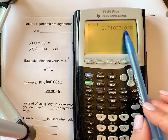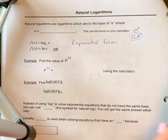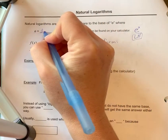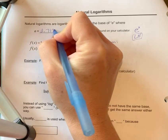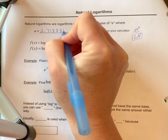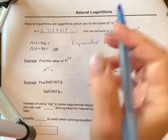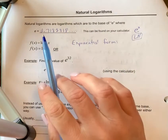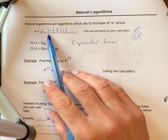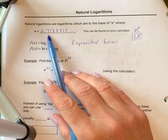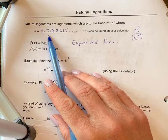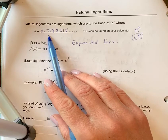2.718281828, and it continues. It's an irrational number. So 2.7182818, etc. Now you are expected to know without a calculator that this is approximately 2.7, just like you're expected to know pi is approximately 3.14. So you will need to know that number.